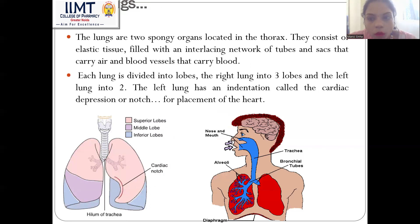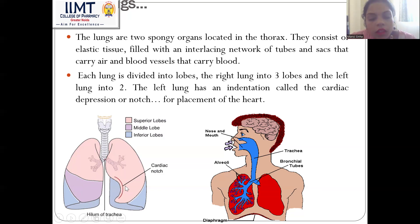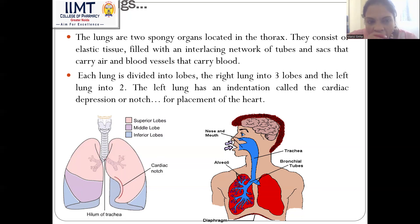Now we come to another important structure: the lungs. The lungs are two spongy organs located in the thorax, consisting of elastic tissue filled with an interlacing network of tubes and sacs that carry air, and blood vessels that carry blood. Each lung is divided into lobes — the right lung has three lobes and the left lung has two lobes. The left lung has an indentation known as the cardiac depression or cardiac notch, because the heart is located there. That is why the left lung is smaller than the right lung.